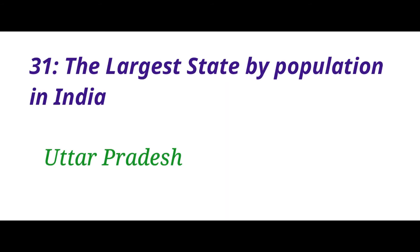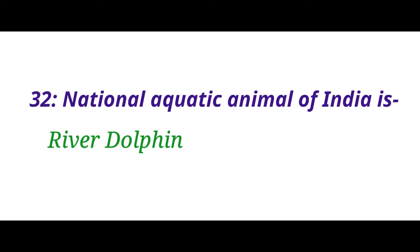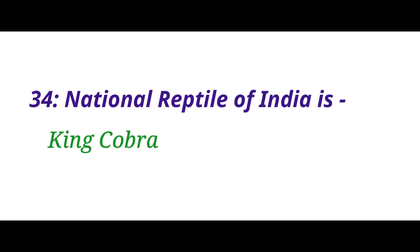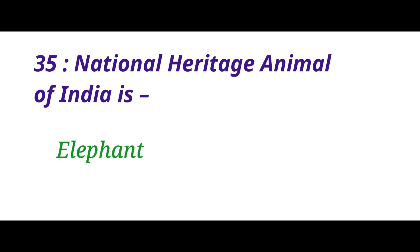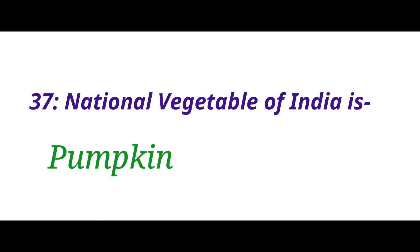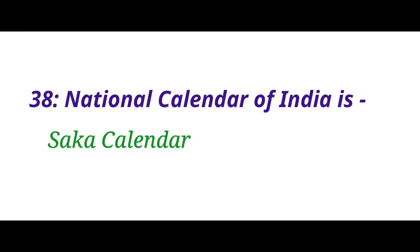The largest state by population in India is Uttar Pradesh. The national aquatic animal of India is River Dolphin. The national currency of India is Indian Rupee. The national reptile of India is King Cobra. The national heritage animal of India is Elephant. Which is the national symbol of India? The answer is Lion Capital. The national vegetable of India is Pumpkin. The national calendar of India is Saka calendar.